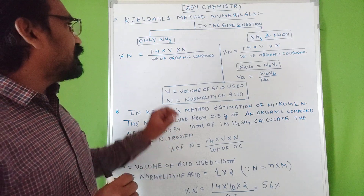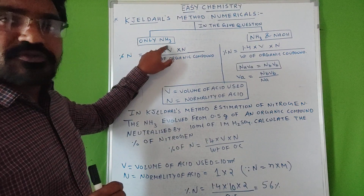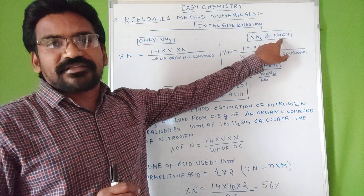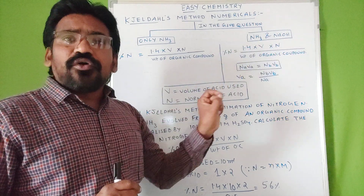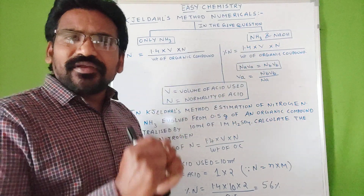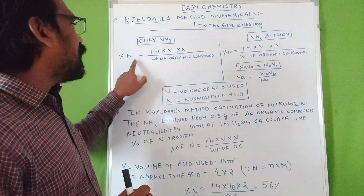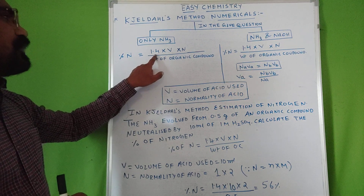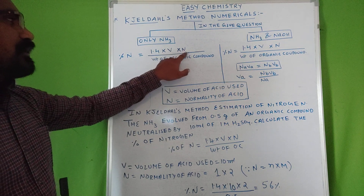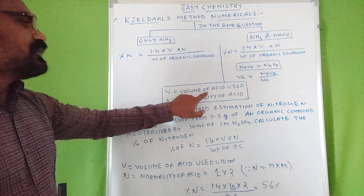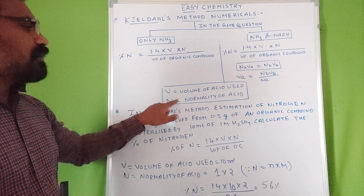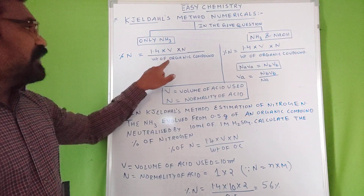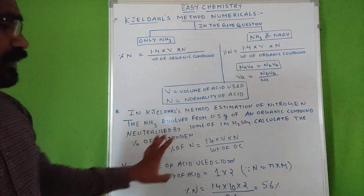First, observe whether in the given question only NH3 is present, or both NH3 and NaOH are present. If only NH3 is present in the given question, then use this formula: percentage of nitrogen equals 1.4 × V × N, where V means volume of acid used and N means normality of the acid, divided by weight of the organic compound.